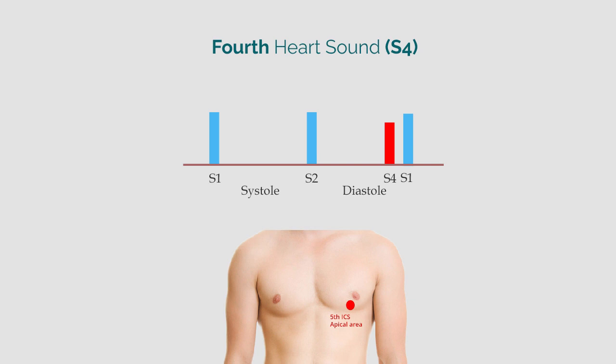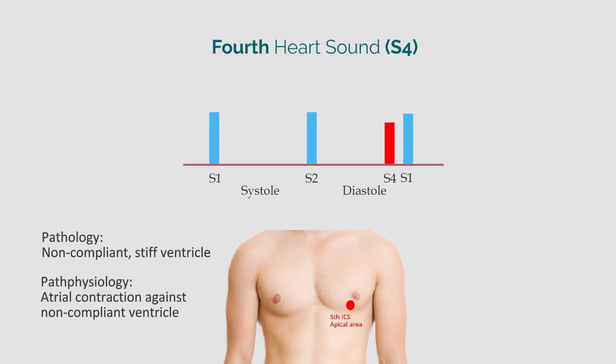S4 is always pathological, and its presence suggests the presence of a noncompliant ventricle during diastole. S4 is produced when there is a forceful atrial contraction against this noncompliant, or stiff, ventricle during the last third of diastole. So as you can guess, S4 cannot be heard if there is atrial fibrillation, even if the ventricles are noncompliant.